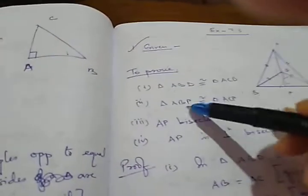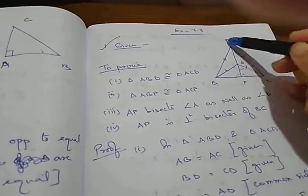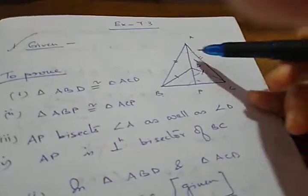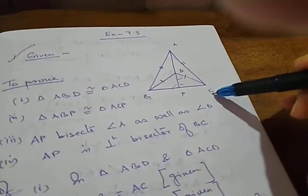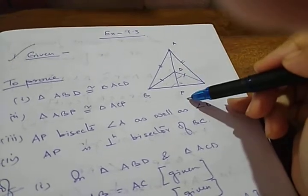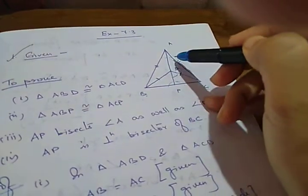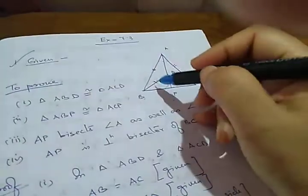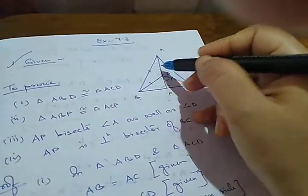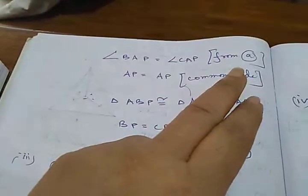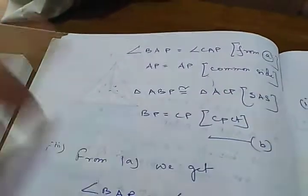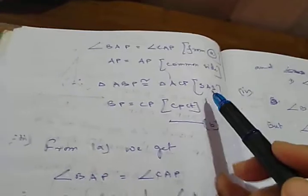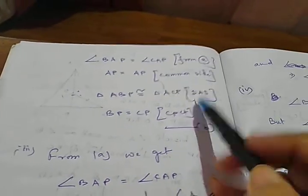Next we are going to prove that triangles ABP and ACP are congruent. AB equals to AC is given. AP is the common side. And just now we have proved that angle BAP equals to angle CAP. So we can prove congruence by side-angle-side. We have written: AB equals to AC given, BAP equals to CAP from A, and AP is the common side. Therefore these two triangles are congruent with the help of side-angle-side congruency.